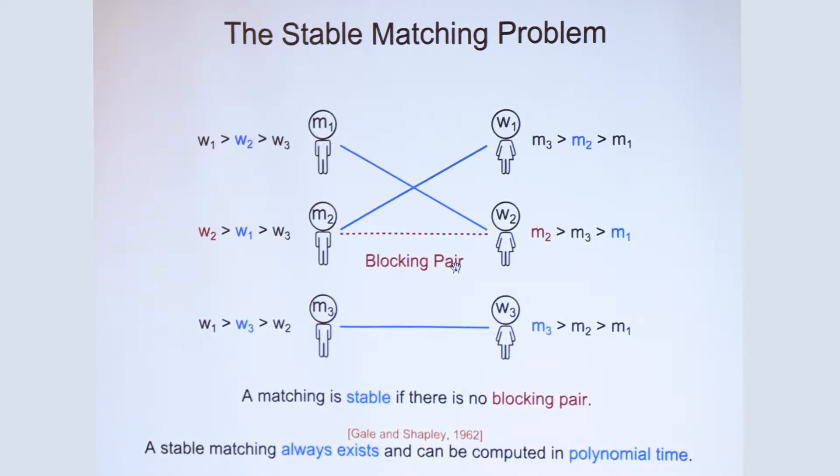Thankfully, we know from the seminal work of Gale and Shapley that a stable matching always exists, no matter what preferences we are given. And in fact, there is an efficient algorithm for computing a stable matching.